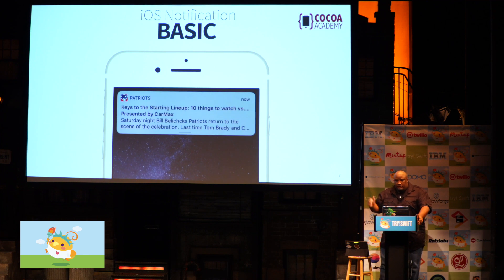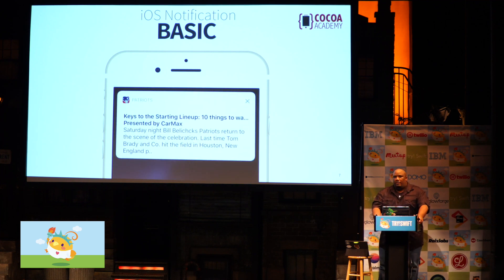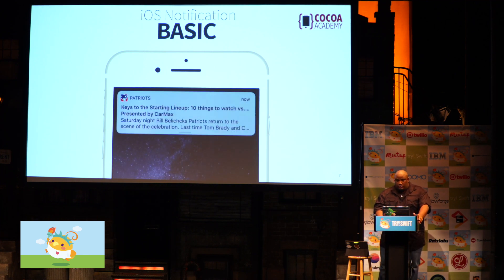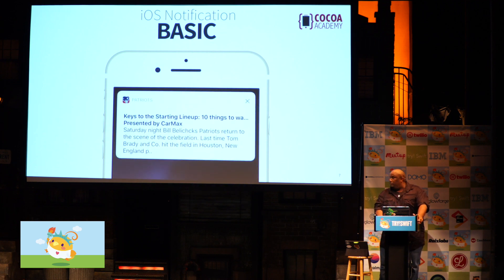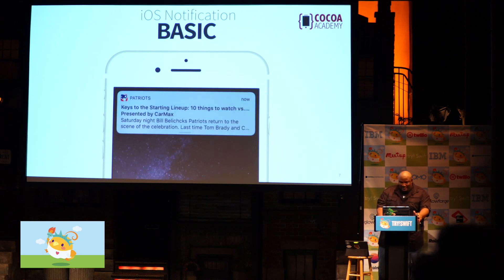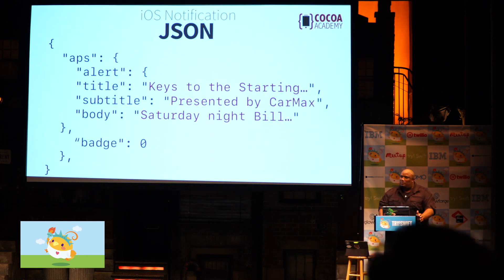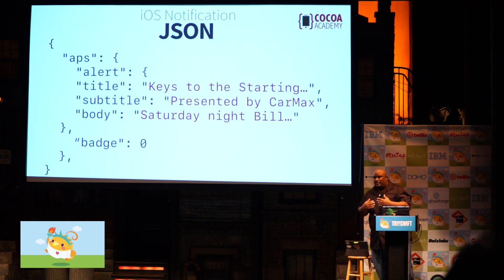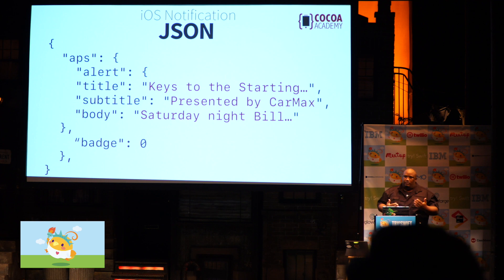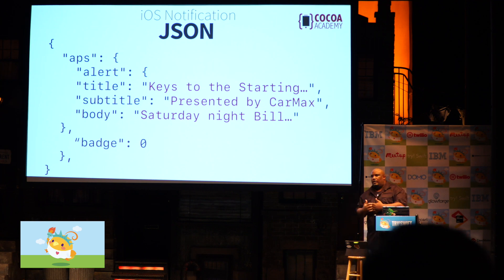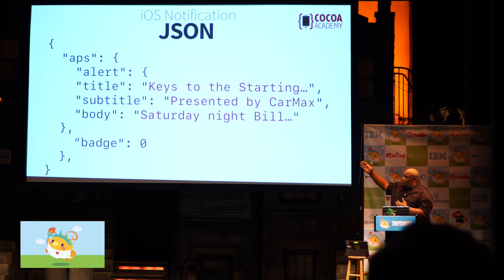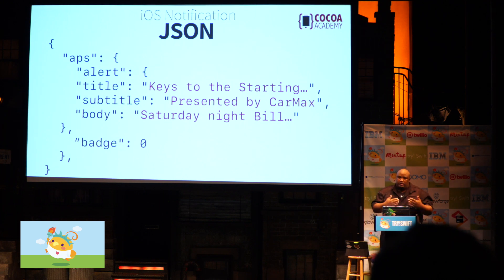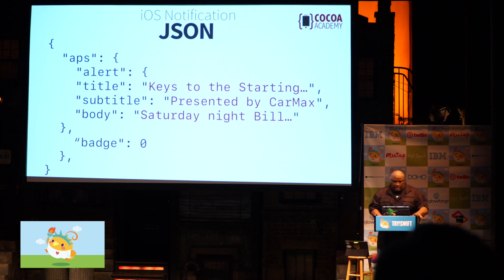Basic notification — everyone has seen these, you know how they work. If you don't, you're probably on Android and you probably shouldn't be here. Here's what an iOS notification in JSON looks like. Pretty simple. We have a dictionary of APS that basically has the alert, title, subtitle, and body. Everything is encapsulated in that.